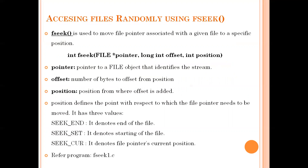Now let's look at some functions used on text files. In the previous session, we discussed how to open a file, read contents, and write contents. Now we will discuss how to access files randomly. Generally, files can be accessed sequentially using read and write. If you want to access file contents randomly from a specified location, we need to use the fseek function. The fseek function is used to move the file pointer associated with a given file to a specific position.